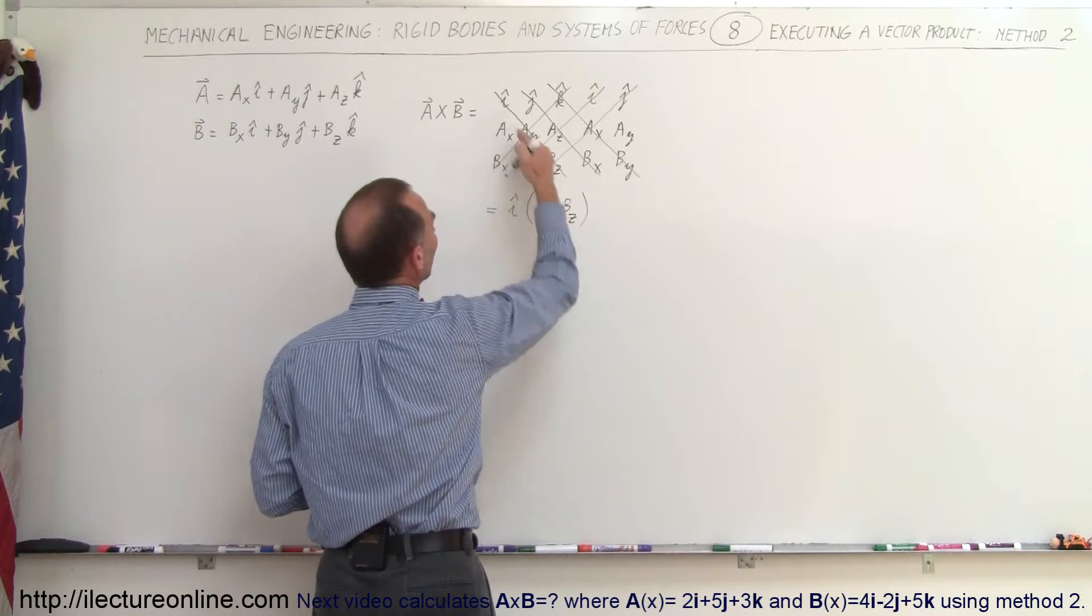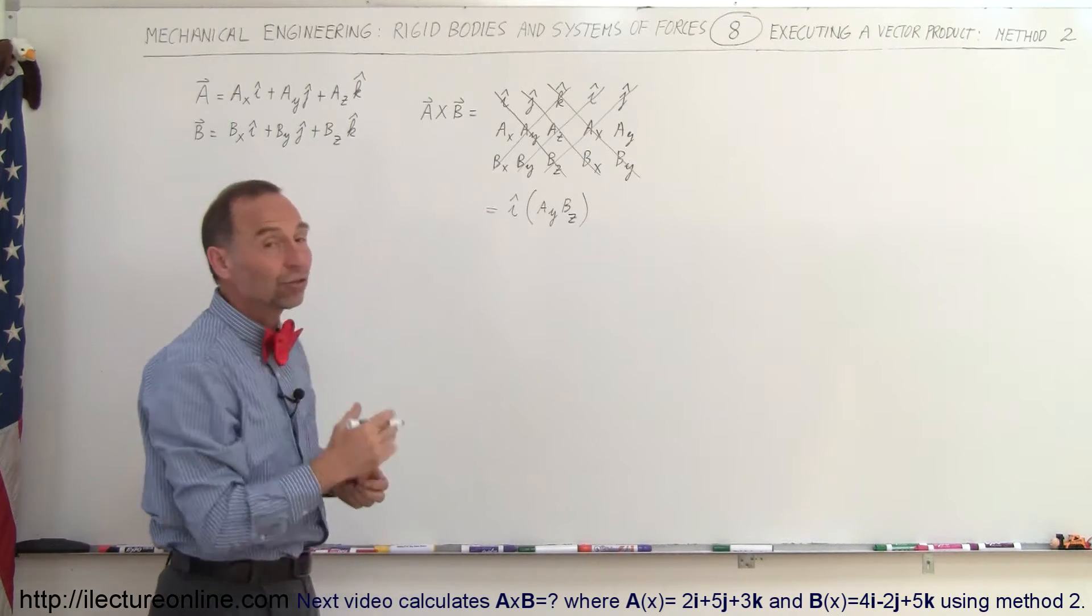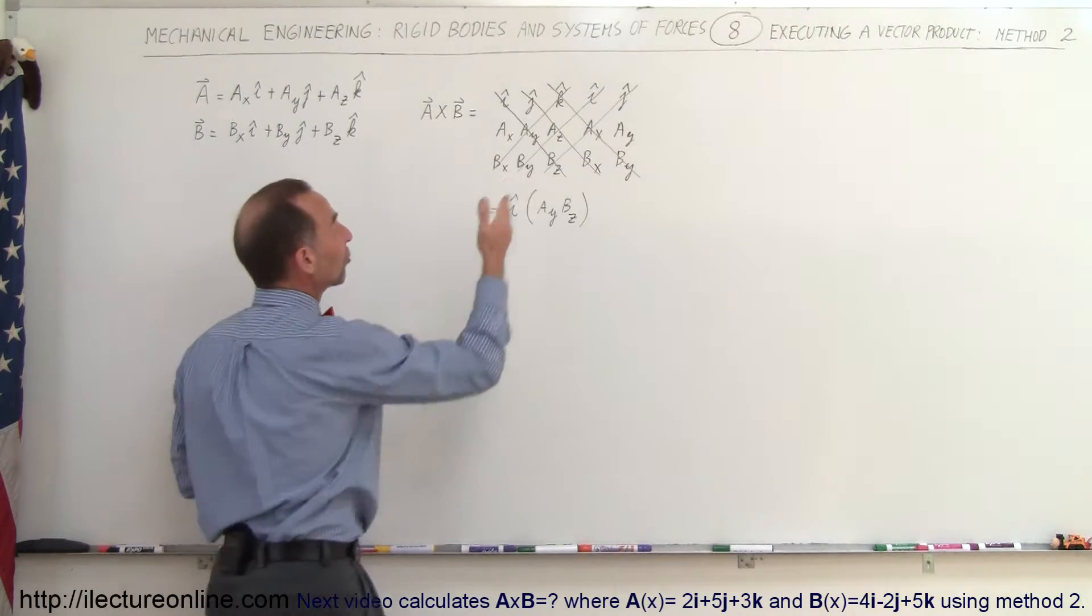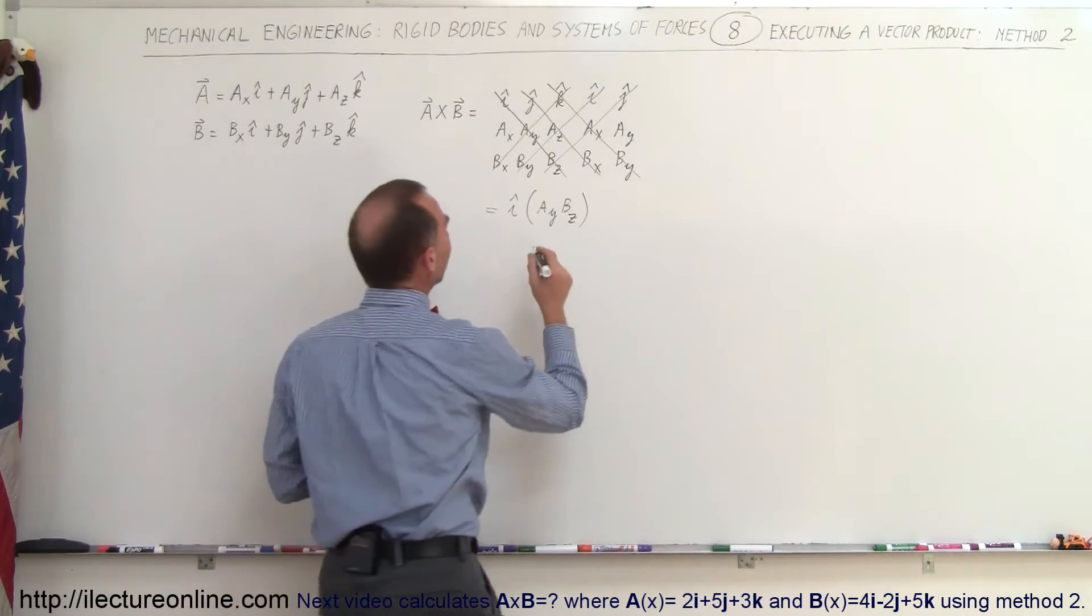So essentially you're multiplying all the elements on each of the diagonals going from left to right, and then you're subtracting all the products when you go from right to left in the other direction. So just a moment, see what that looks like.